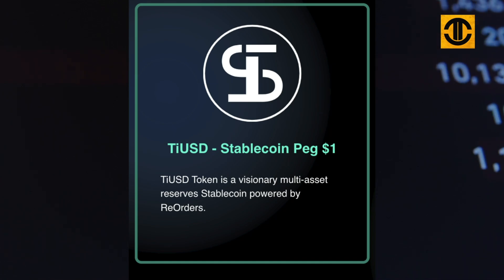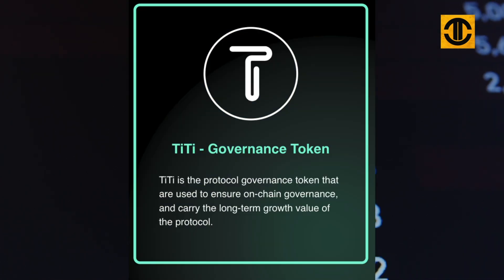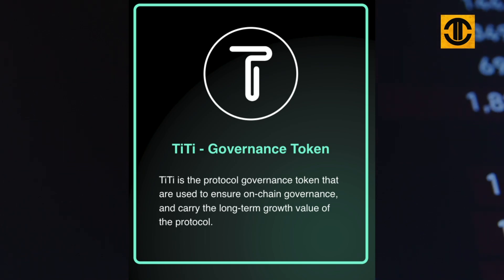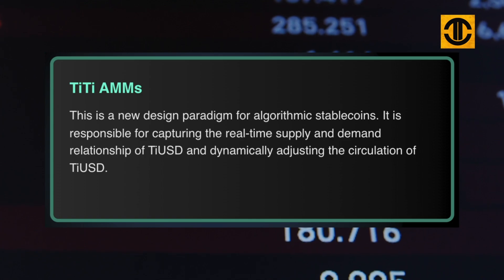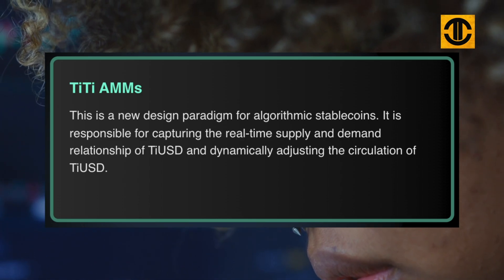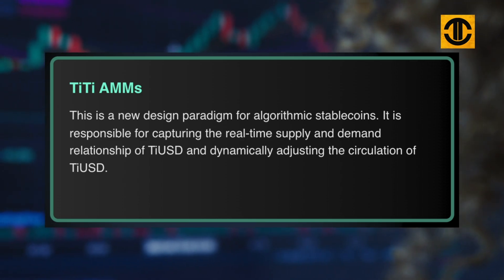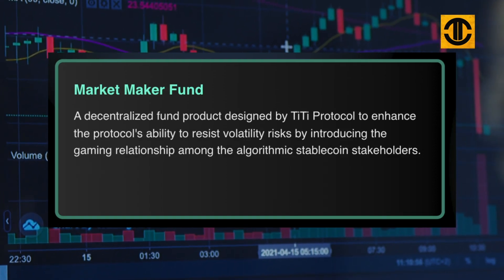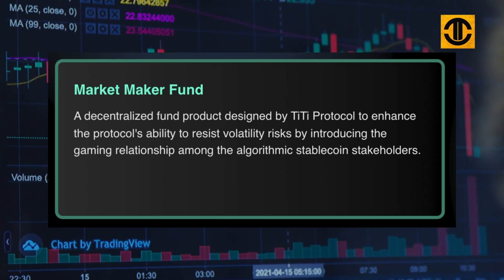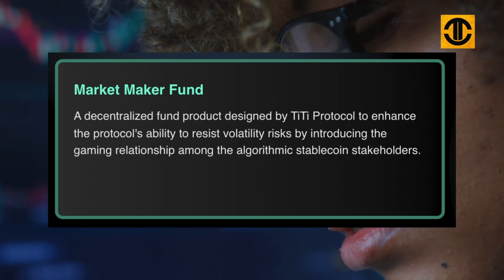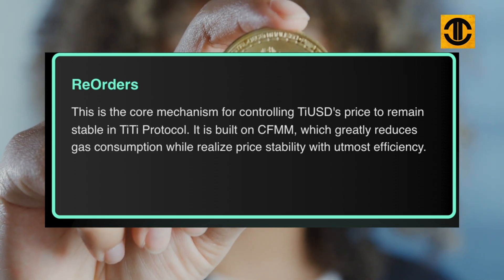T-USD token is a visionary multi-asset reserve stablecoin powered by Reorders. This is a new design paradigm for algorithmic stablecoins — it is responsible for capturing the real-time supply and demand relationship of T-USD and dynamically adjusting its circulation. TT Protocol also features a decentralized fund product designed to enhance the protocol's ability to resist volatility risks by introducing gaming relationships among algorithmic stablecoin stakeholders.